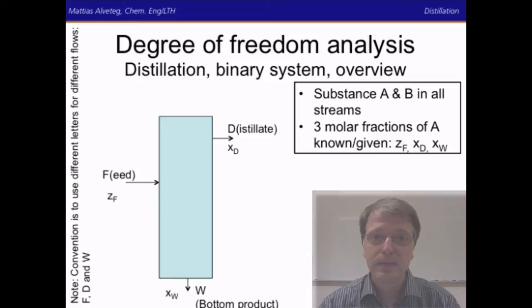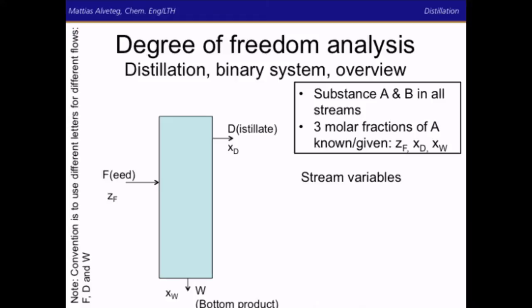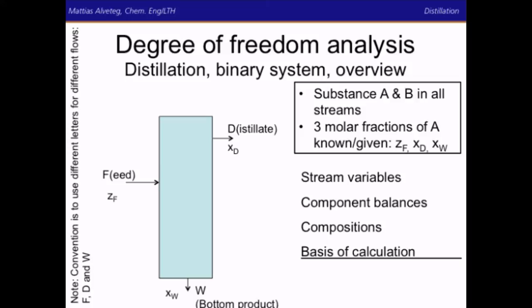In the degree of freedom analysis we have stream variables, component balances, compositions given, a basis of calculation, and we can calculate the degrees of freedom. We have three flows and two substances in each flow, so three times two equals six stream variables. We have two components and one system, so we can have two component balances. We have three molar fractions given, all independent, so minus three. We introduce one basis of calculation and get zero degrees of freedom — this system is solvable.